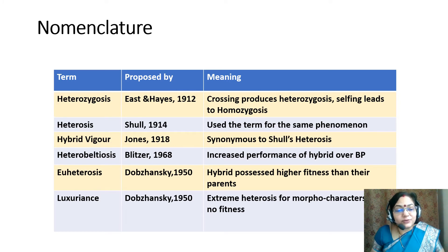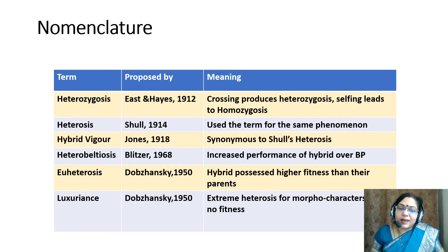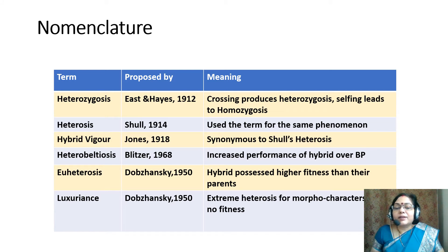Let us see some nomenclature in heterosis. Number one is heterozygosis, proposed by East and Hayes in 1912. They stated that crossing produces heterozygosis while selfing leads to homozygosis. The term heterosis was proposed by Shull in 1914, who used the term for the same phenomenon.